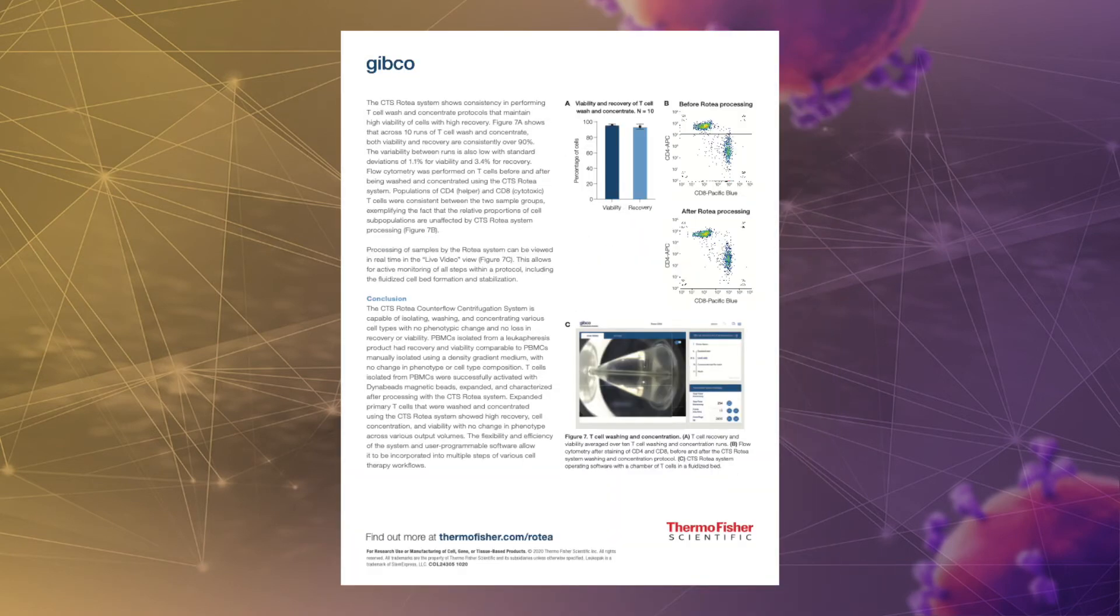Key features of the CTS-Rotea system include low output volumes, as little as 5 milliliters, as well as process flexibility, utilizing user-programmable software that enables creation and optimization of protocols. Another key aspect is high cell recovery and viability. A fluidized bed supports low shear processing, enabling greater than 95% cell recovery without decreasing cell viability.